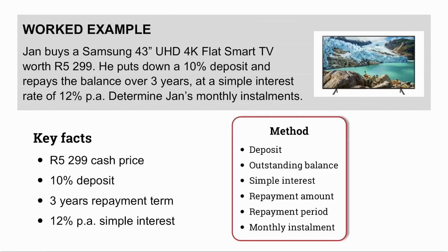Let's look at a worked example. Jan buys a TV worth R5,299. He puts down a 10% deposit, repays the balance over 3 years at a simple interest rate of 12% per annum. Determine Jan's monthly installments. We write down our key facts: cash price, deposit, repayment term, and interest rate. Note: it is simple interest only for hire purchase.